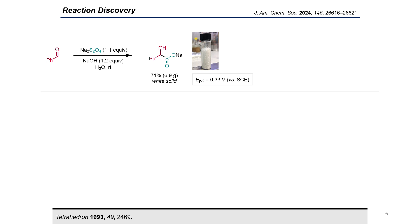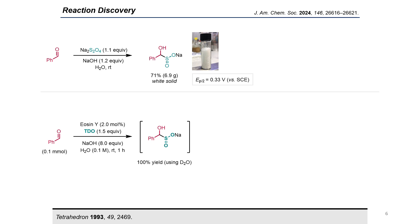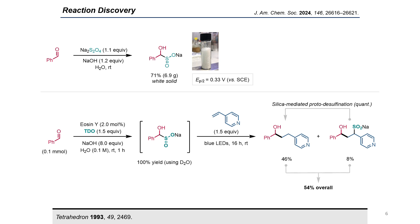Our investigation began by synthesis and isolation of the benzaldehyde-derived alpha-hydroxy sulfinate. Following the reported method, the desired sulfinate product was obtained in 71% yield as white solids. Cyclic voltammetry revealed a low oxidation potential of approximately 0.3 V. We were pleased to find that the alpha-hydroxy sulfinate could be quantitatively formed in-situ. Subsequent addition of the model olefin substrate 4-vinylpyridine followed by photoredox irradiation gave the desired product in 46% yield. Unexpectedly, a sulfonate side product with SO₂ incorporation was also observed, but was quantitatively converted into the desired product via silane-mediated protodesufonation, giving an overall yield of 54%.